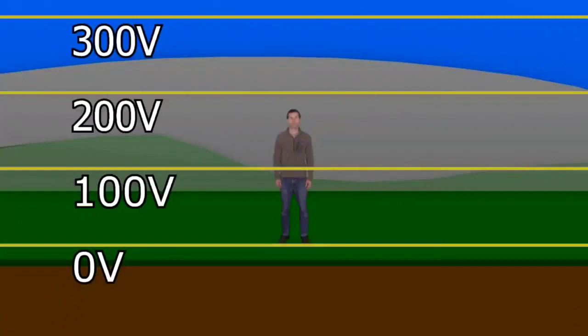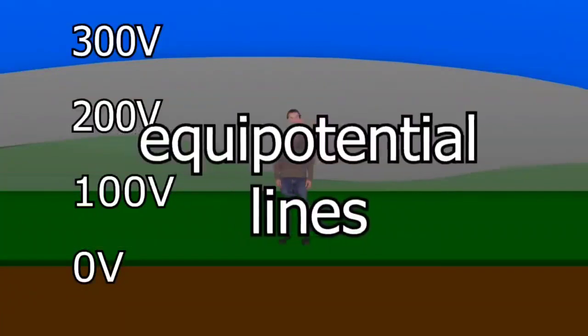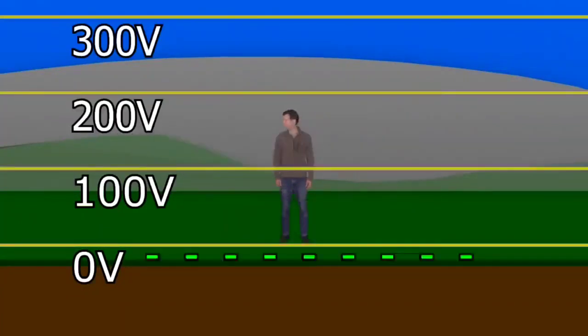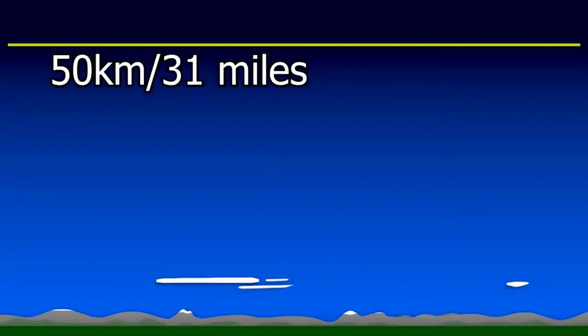We can draw these voltage increases using what are called equipotential lines. Notice that the ground is negative and the sky is positive with respect to each other. According to Feynman, this extends upward to 50 kilometers or 31 miles where the air is very conductive.